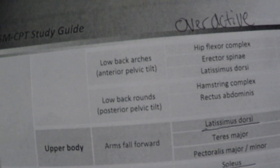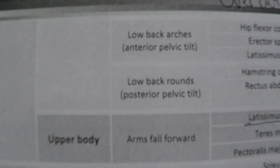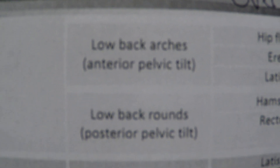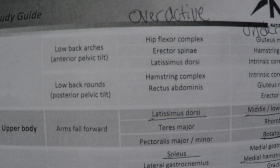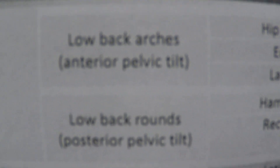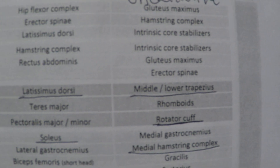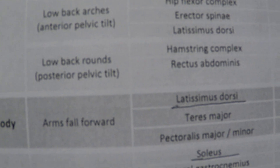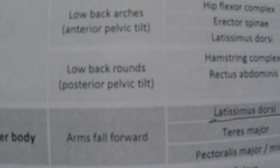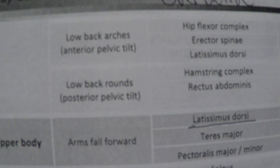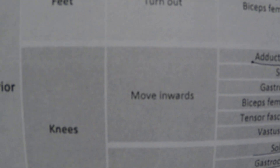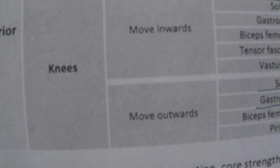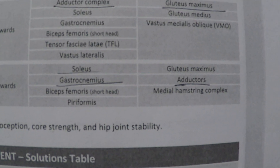This stuff in real life will be easier to remember and more applicable, but right now it's just a lot of memorization. When your low back arches, you need to know which muscles are overactive and underactive. When the low back rounds - I don't think there are questions about that one. Arms falling forward, feet turning out, knees moving inward or outward - you have to know all of these.